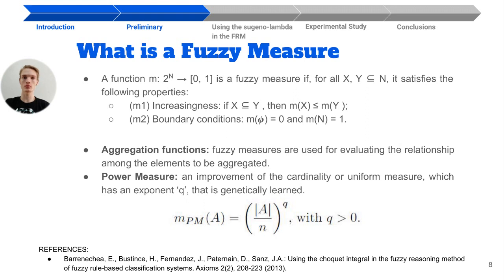You can see the equation below. Consequently, for each class of the problem, this formula behaves like a different fuzzy measure by learning the most appropriate exponent. Note that if Q is equal to 1, this measure behaves as the cardinality or the uniform measure.